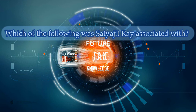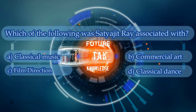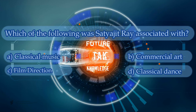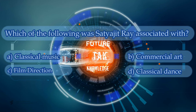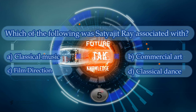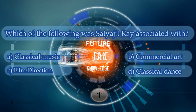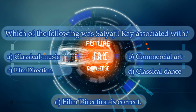Which of the following was Satyajit Ray associated with? Option A: Classical music. Option B: Commercial art. Option C: Film direction. Option D: Classical dance. Option C is correct.